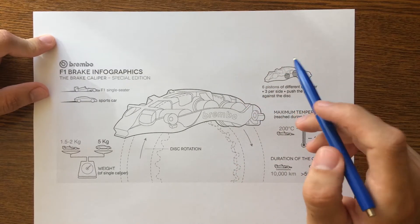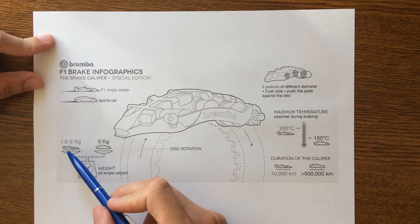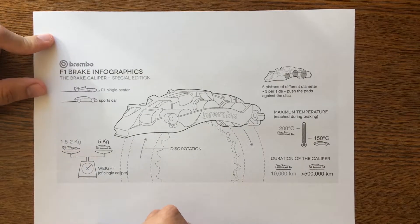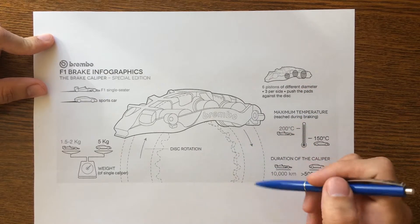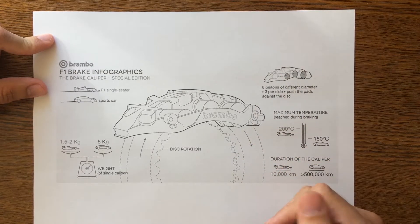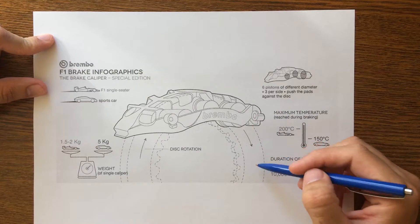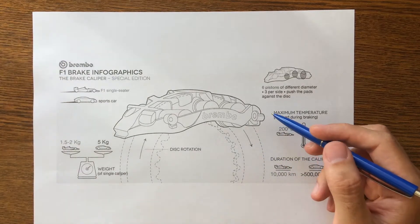An F1 caliper weighs around 1.5 up to 2 kilograms and it has six pistons to push against the brake disc. Three different sized pistons on each side will provide three different pressures.